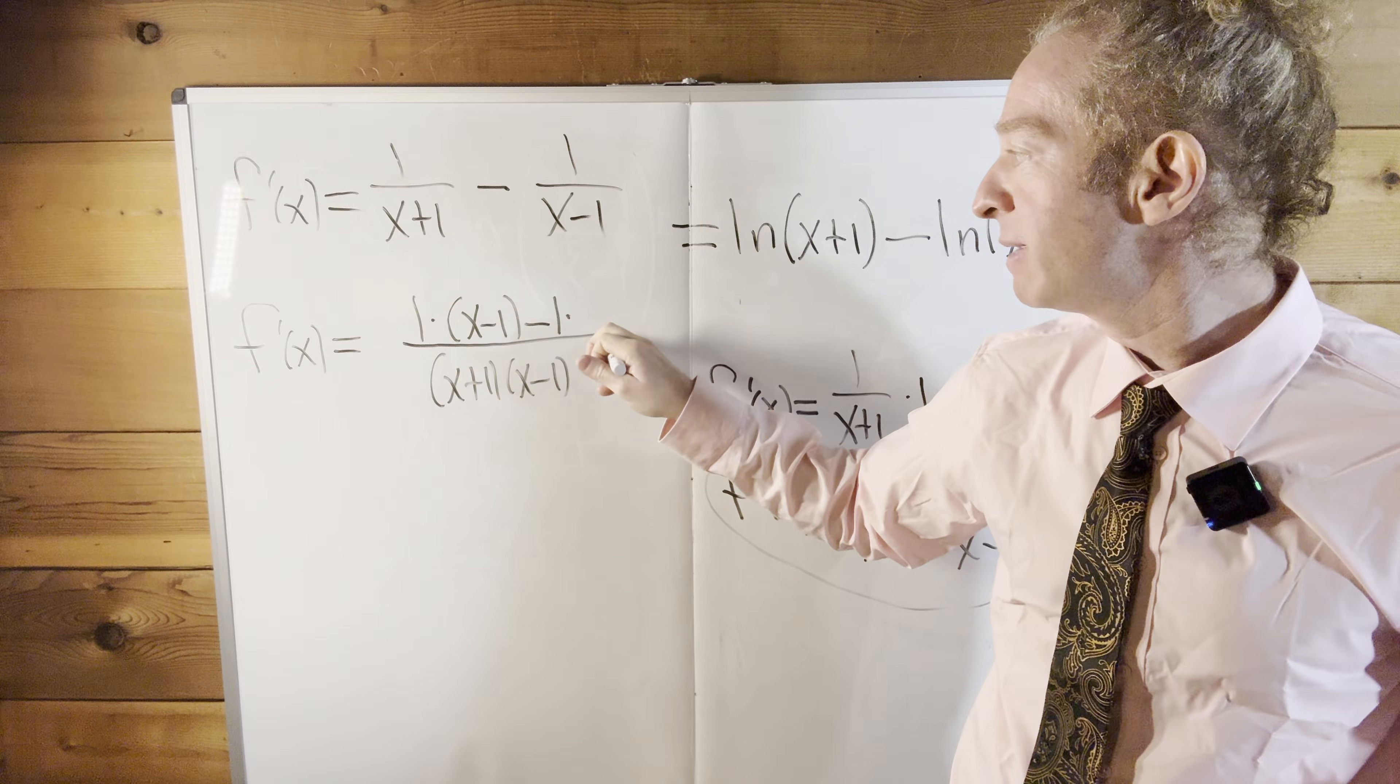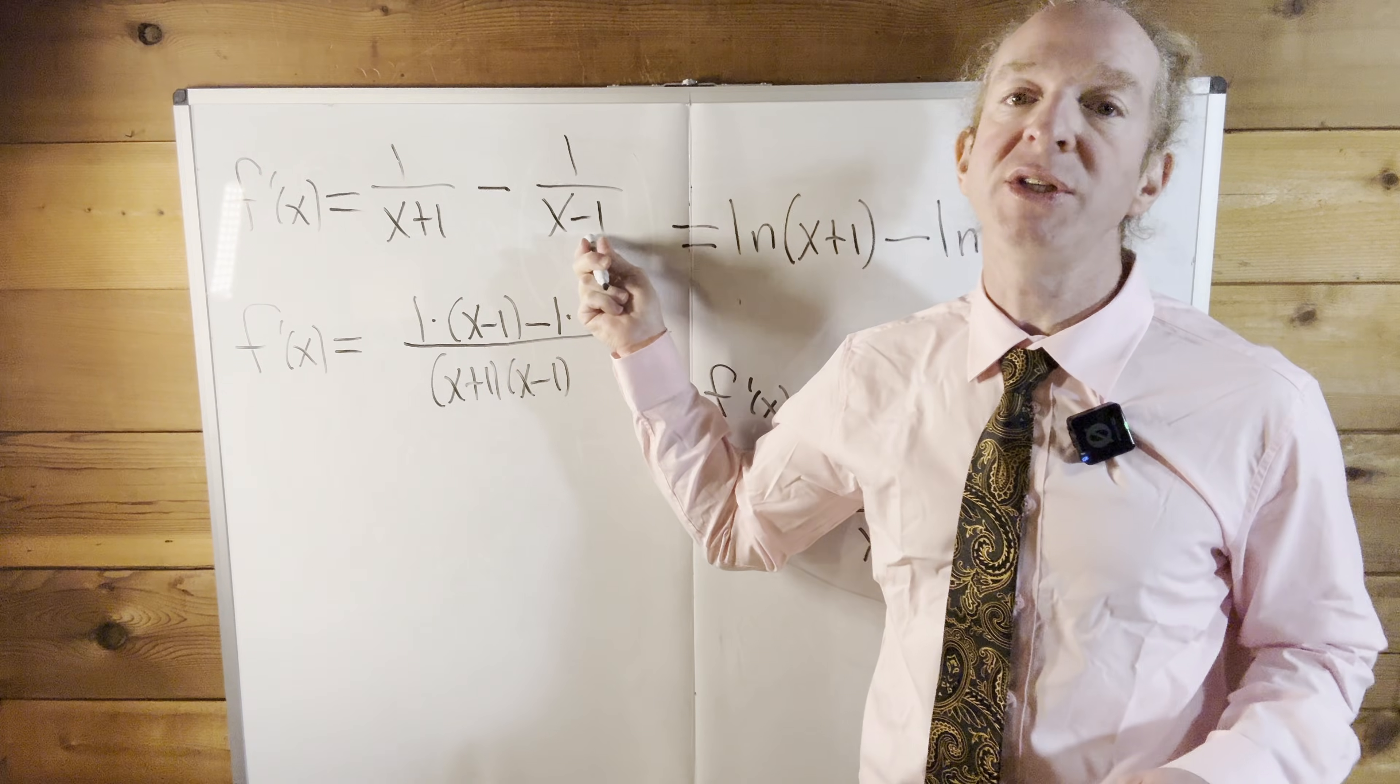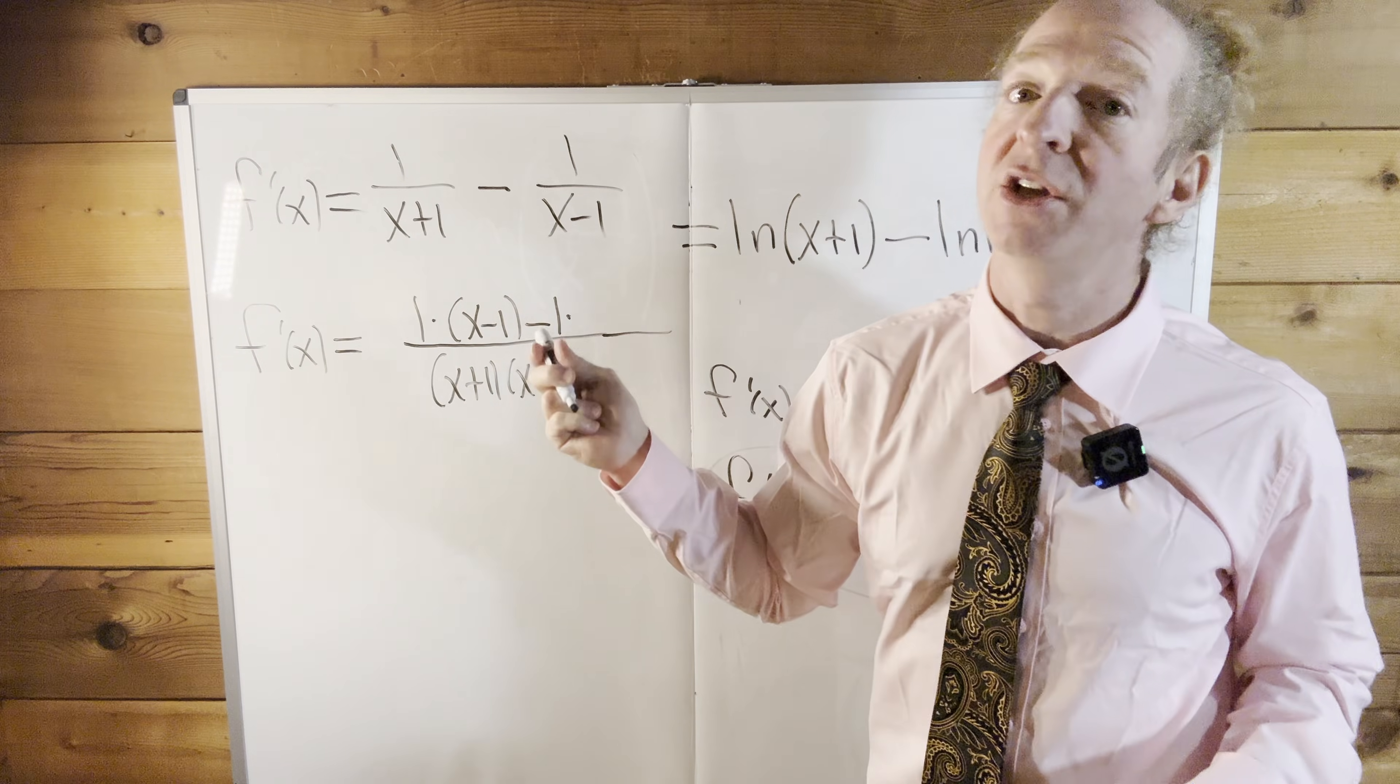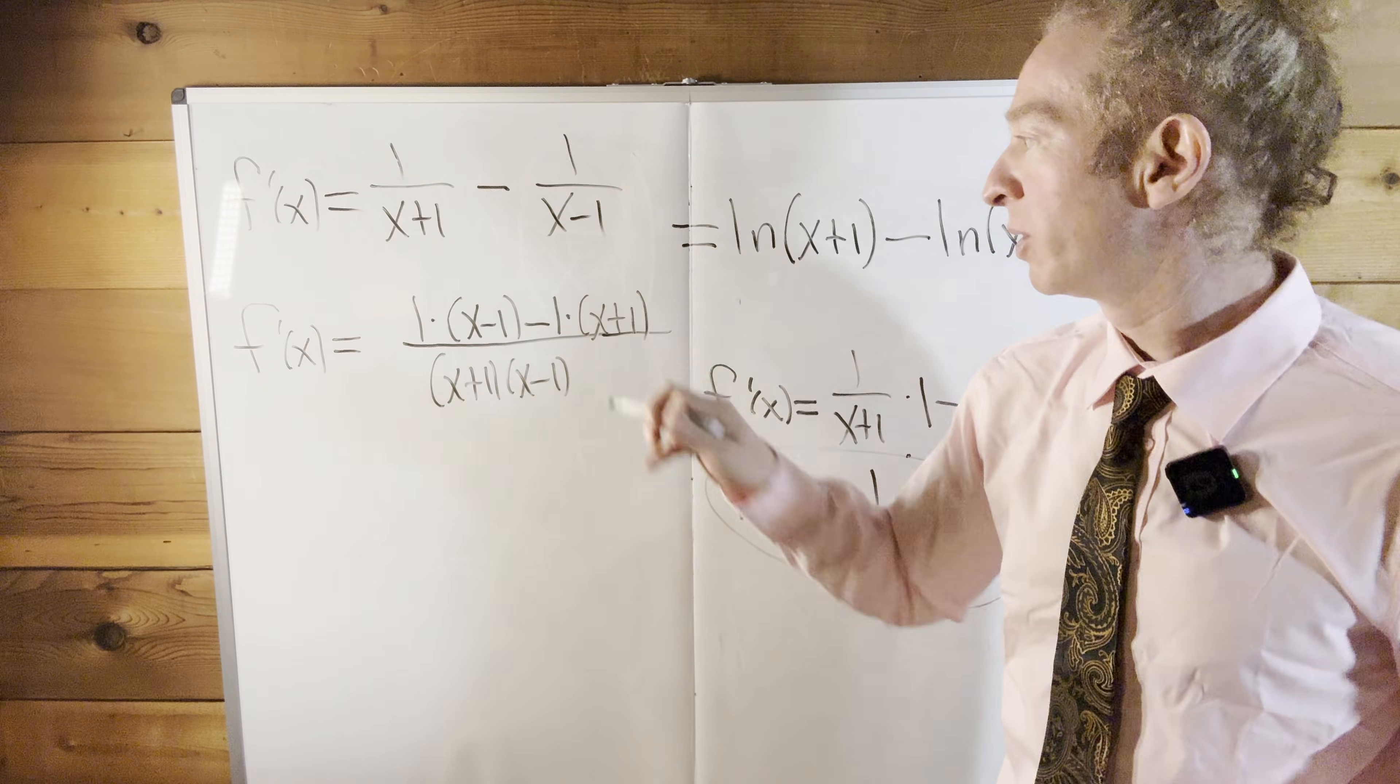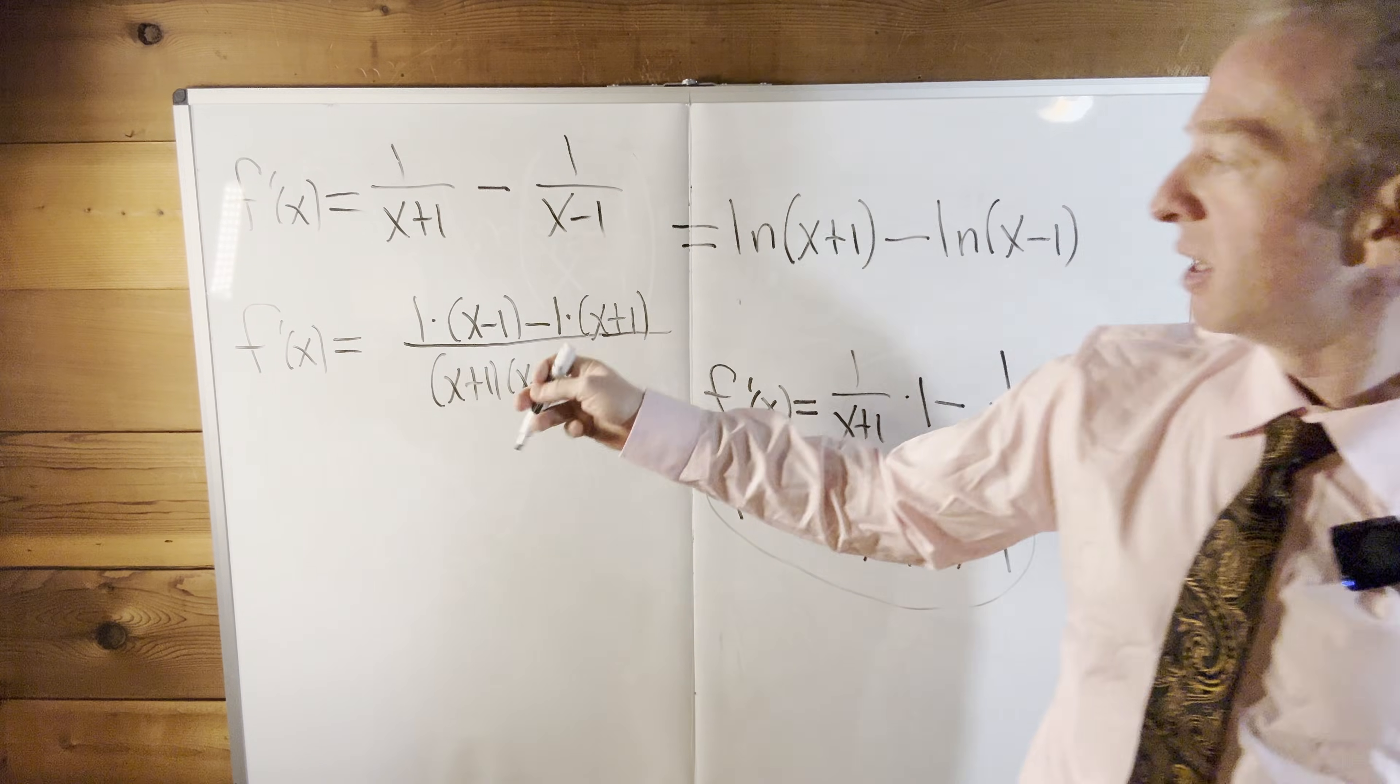Minus 1 times, well, what's missing here? What do you need here to get the common denominator? You need an x plus 1, so it's 1 times x plus 1, just like that. Let's keep going.